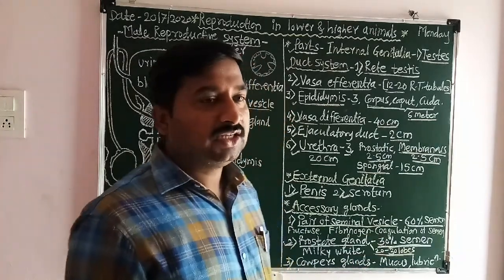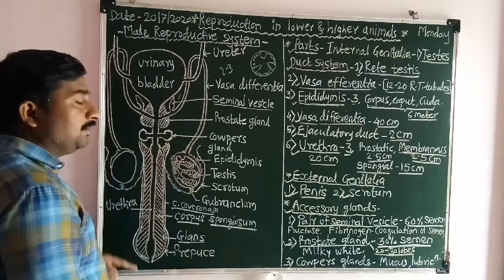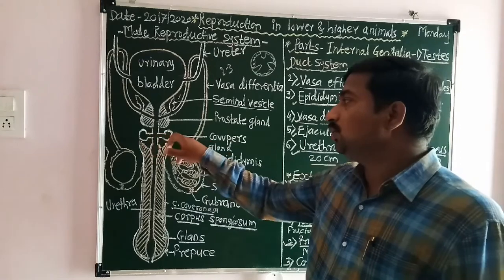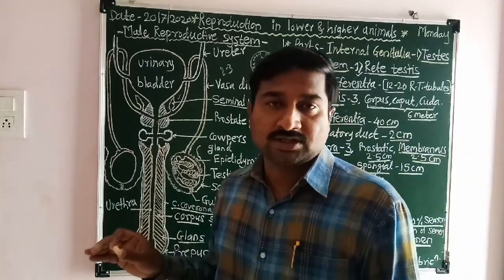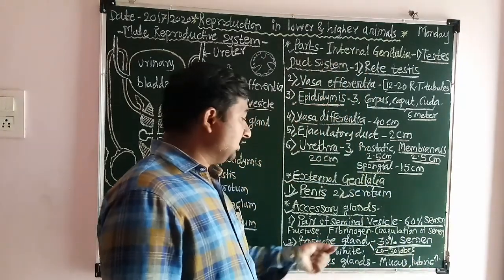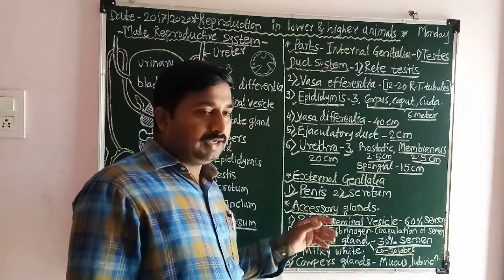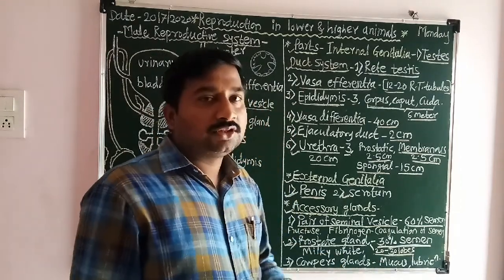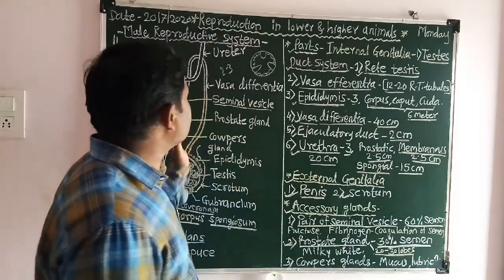The Cowper's glands, also called bulbourethral glands, are paired, pea-shaped glands present on the membranous urethra. They secrete mucus or lubricating fluid which is useful for lubrication during sexual intercourse. That is all about the accessory sex glands and the different parts of the male reproductive system.